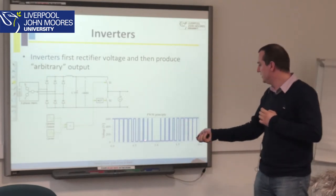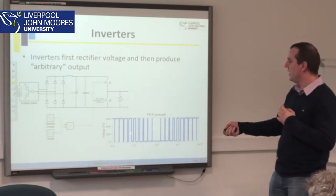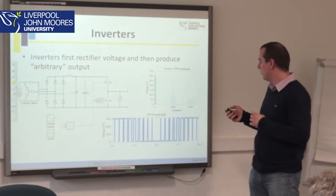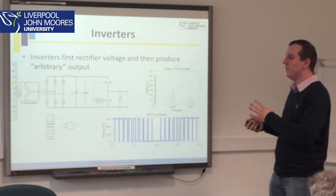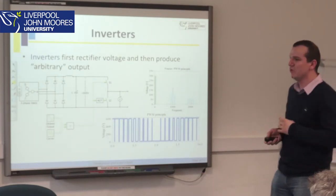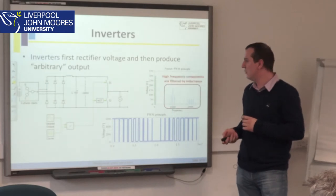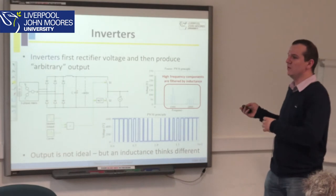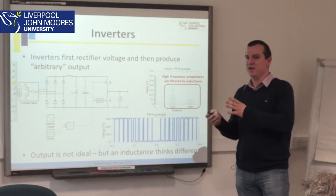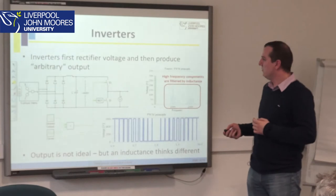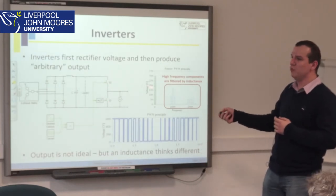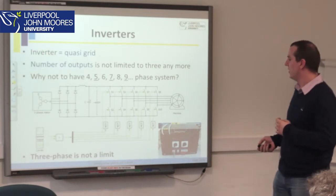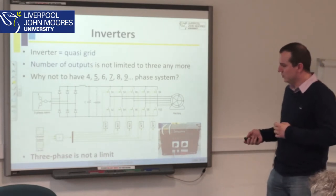The output voltage is not ideally sinusoidal, but on average the square-wave pattern is sinusoidal. Looking at the spectrum, we have the desired low-frequency component but also high-frequency components. However, inductance doesn't respond to those high frequencies, and all our machines have windings and inductance inside, so it is not a problem. I have shown only one phase here, but why not put more of them? Here is an example of a five-phase inverter, and here is what one of the inverters in our laboratory actually looks like. Three phases are not the limit.